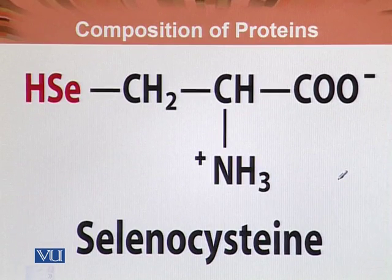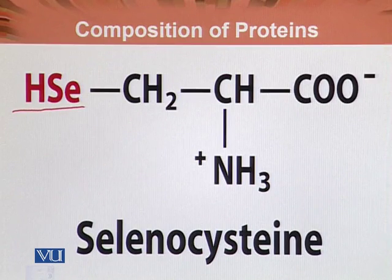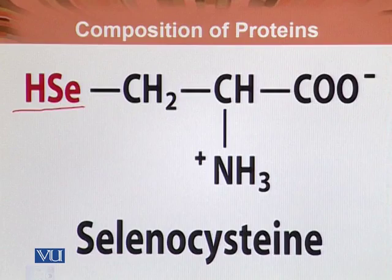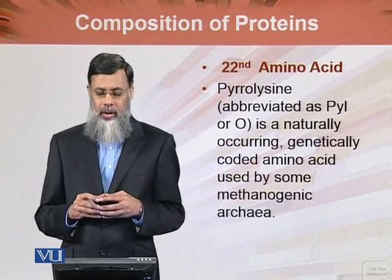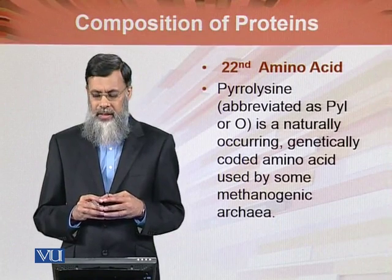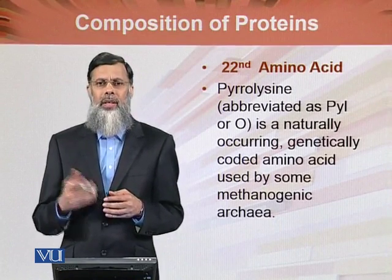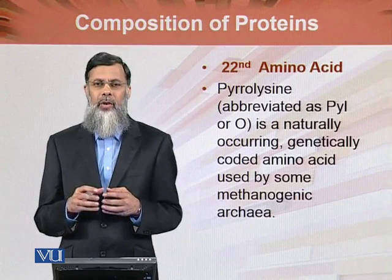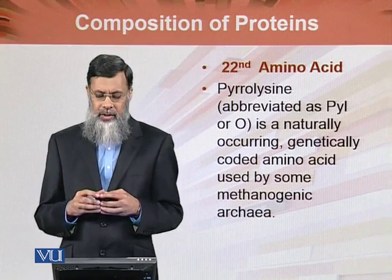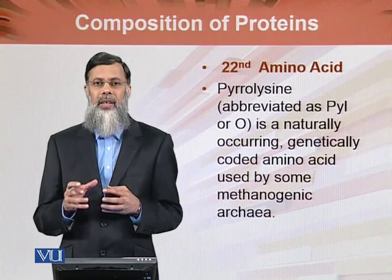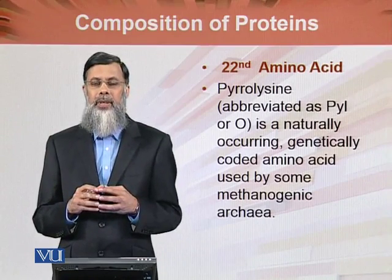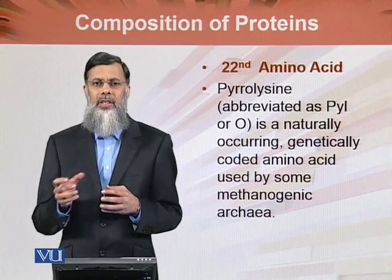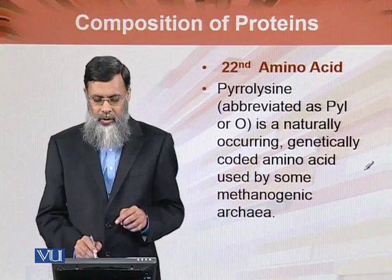We can see that the hydroxyl group of serine is replaced by an atom of selenium, converting serine into selenocysteine. The 22nd amino acid is pyrrolysine, abbreviated as PYL for three letters, or O for single-letter abbreviation.